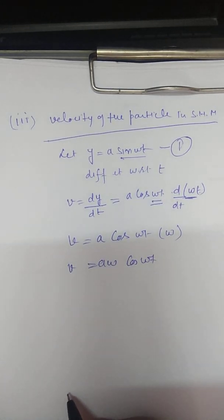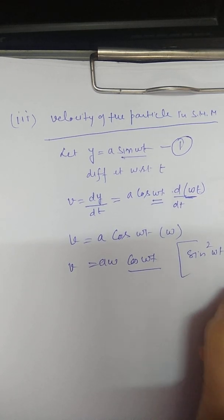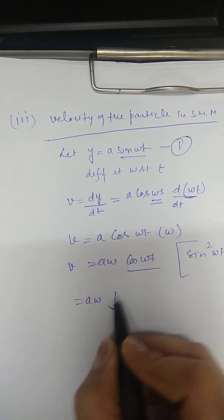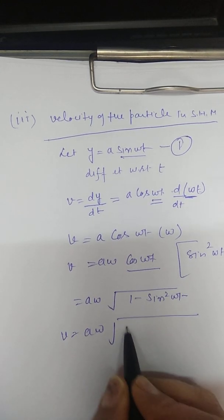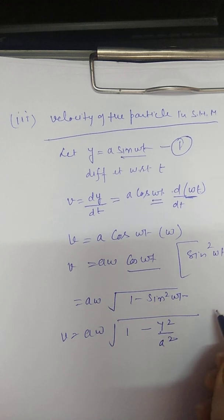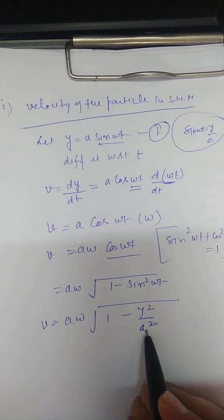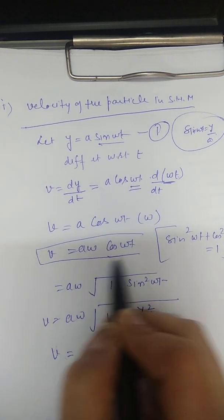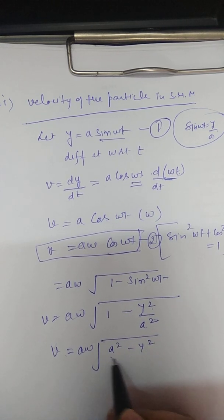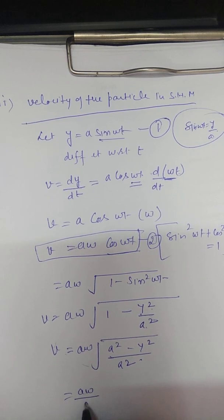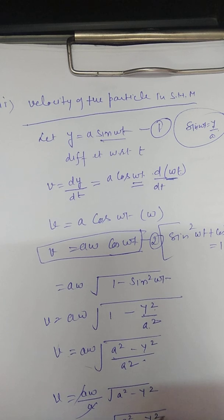From equation 1, sin(ωt) equals y/a. Substituting, velocity v equals A omega times the square root of 1 minus y²/a². Simplifying, v equals omega times the square root of a² minus y². This is equation number 2.